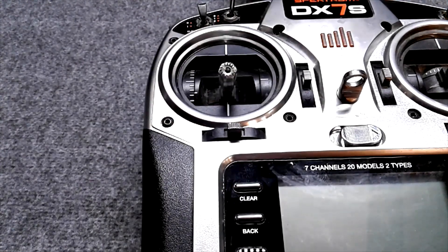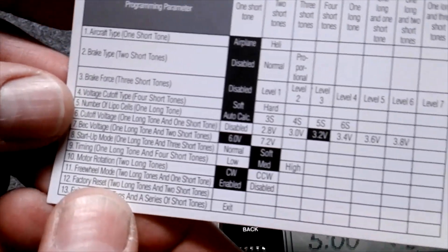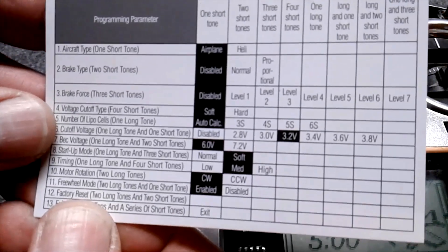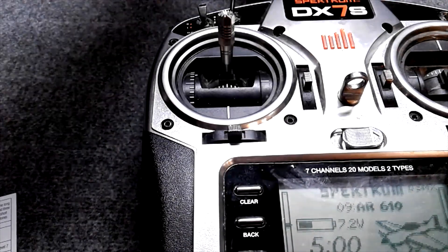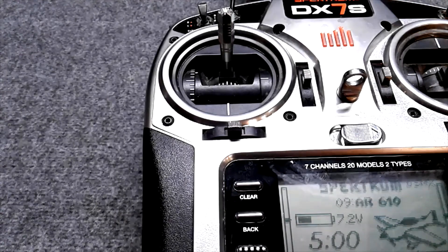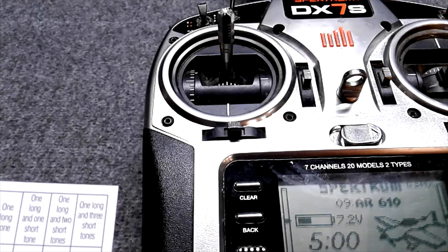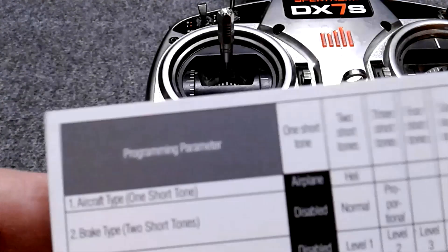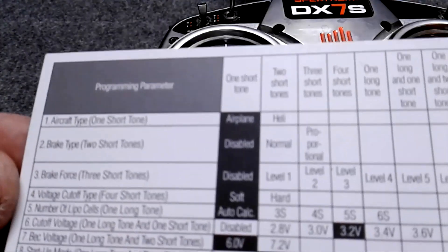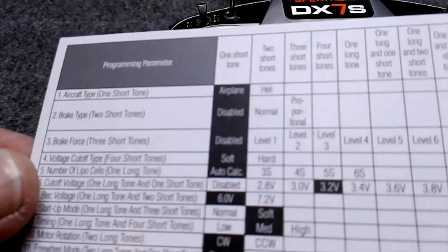Transmitter going on. Throttle that high. We're going to do the same option which is brake force three short tones. Pull the stick down and then we want to wait for two tones and then we'll push the stick back up to select level one. Plugging in the airplane. Listen. Programming mode. That was airplane. Brake type. Brake force. We want two short tones in order to change it to level one. One, two. We just changed it to level one.